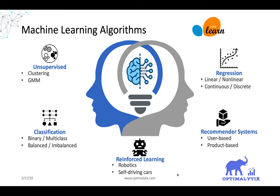Machine learning is very broad. You can focus on regression to get started with machine learning. You can use scikit-learn, which is a very strong machine learning library in Python. There are other algorithms such as classification, recommender systems, reinforcement learning, and unsupervised learning, but regression and classification are the easiest to learn.